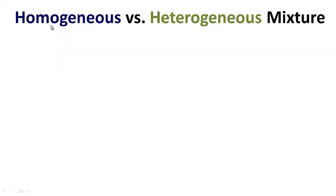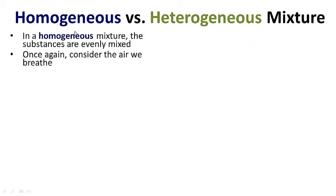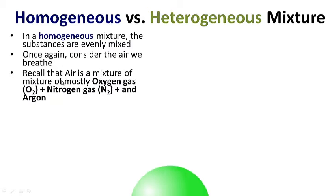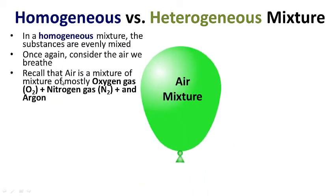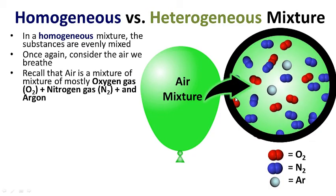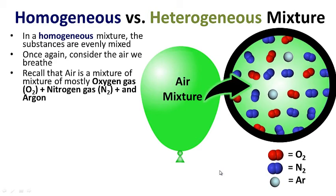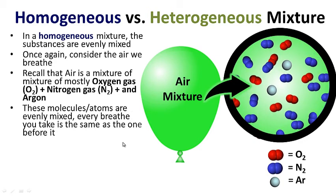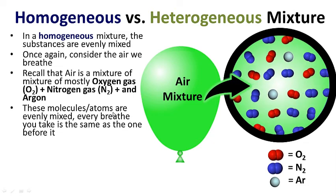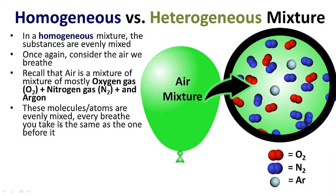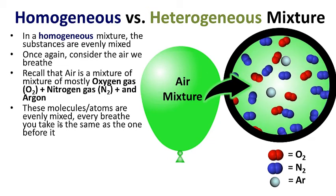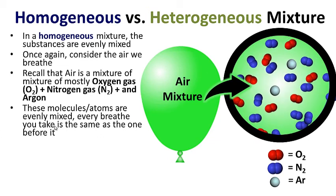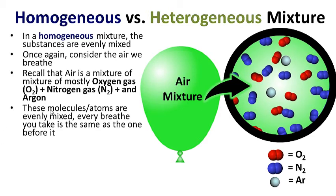The last thing we're going to talk about today is homogeneous versus heterogeneous mixtures. In a homogeneous mixture, the substances are evenly mixed. Consider the air we breathe — air is a mixture of mostly oxygen gas, nitrogen gas, and argon. These molecules and atoms are evenly mixed, making it a homogeneous mixture. Every breath you take is going to be the same as the breath before — that's how you know it's evenly mixed.